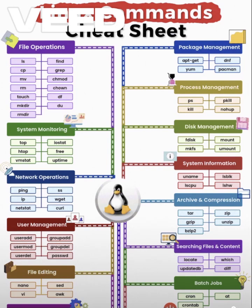File Operations — start with file operations, the basics of Linux life. Use ls to list files, cp to copy, mv to move, and rm to remove. Need a new folder? mkdir creates one, and rmdir removes empty directories. Want to search inside files? find and grep are your best friends.